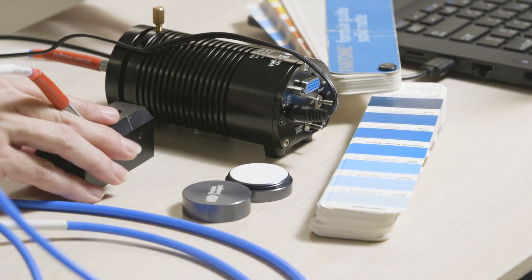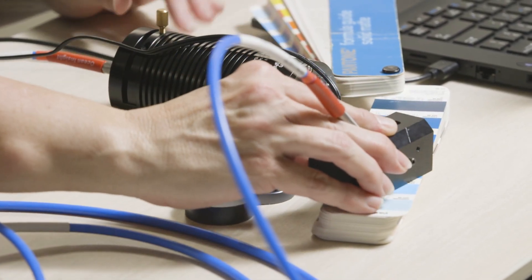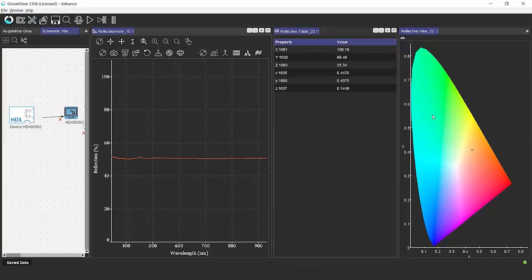To make the measurement, all that we're going to do is place our probe holder directly on the sample that we want to measure. And as you see in the software, we can see changes in the color values and also in the chromaticity diagram.